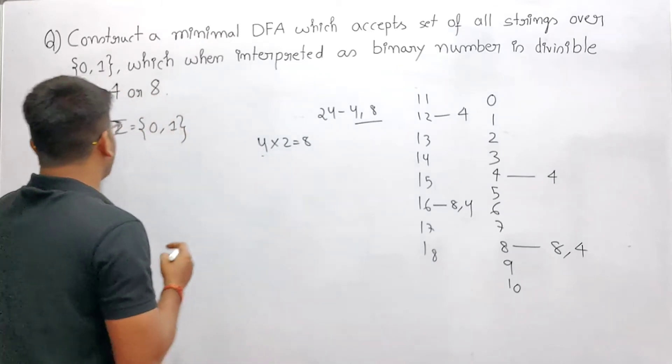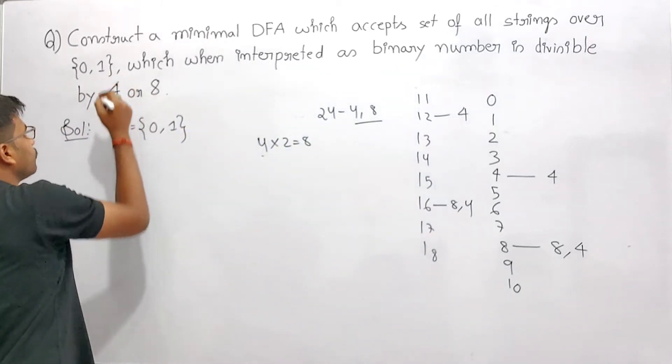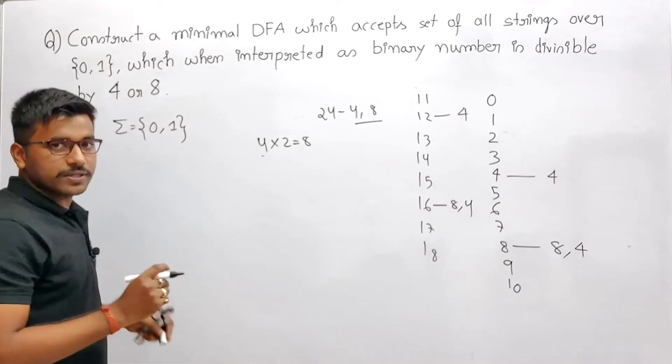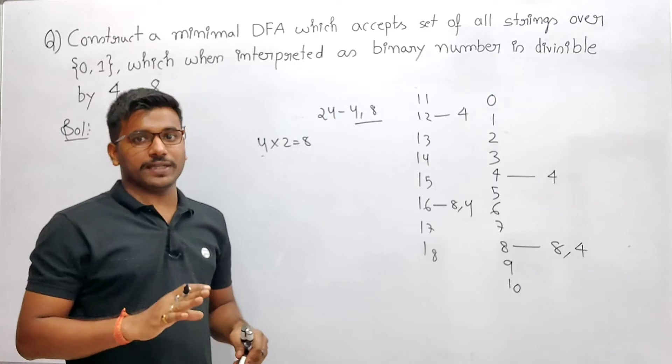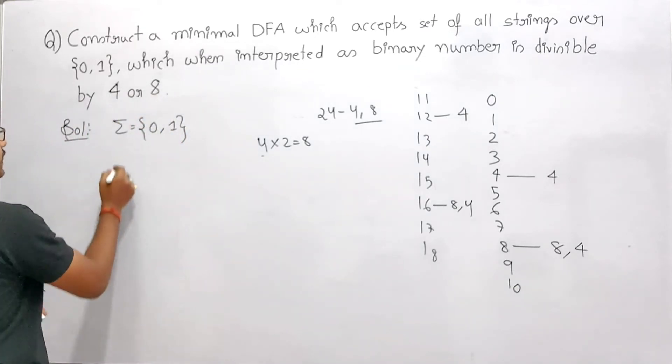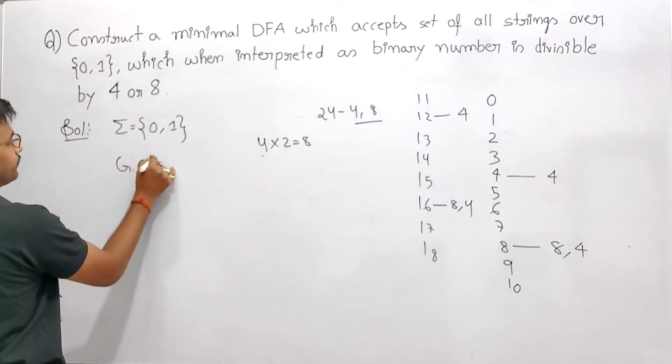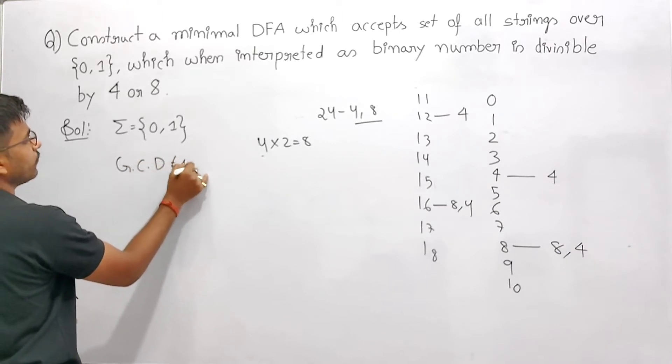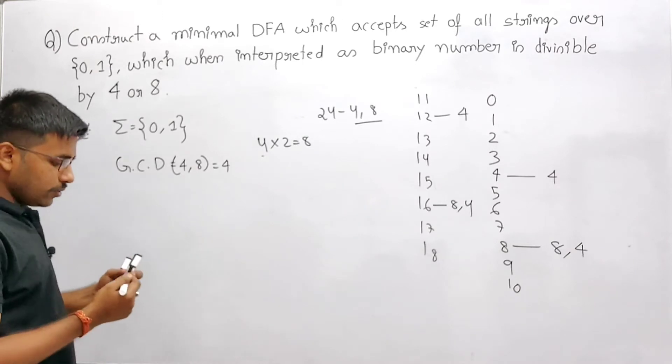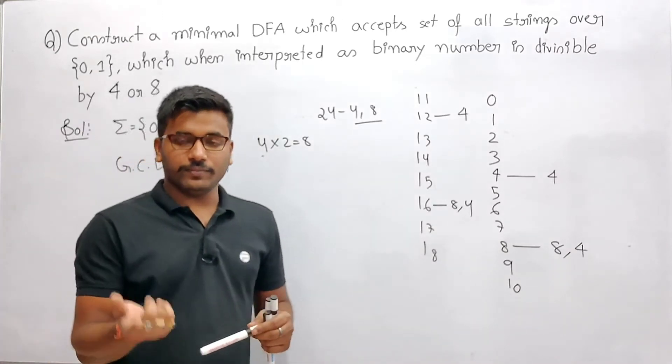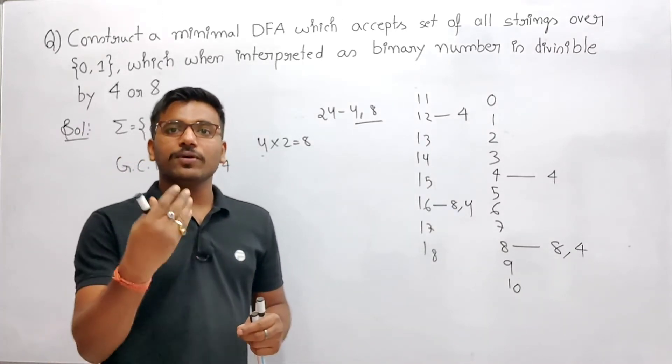So the trick here is that they're asking you just to confuse you, so you'll create the LCM and then say that. But here you need to just find the greatest common divisor, GCD. So GCD of 4 and 8 is going to be 4, that number is going to divide.